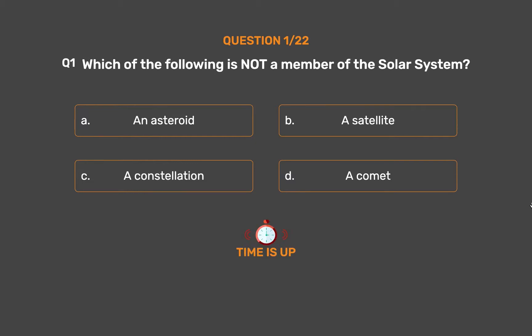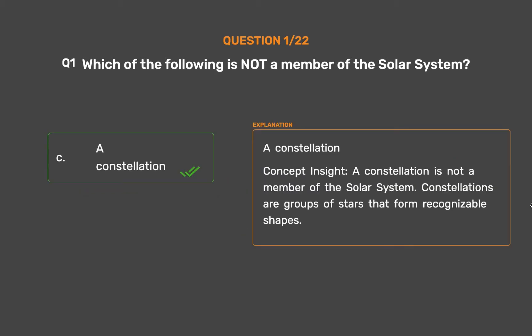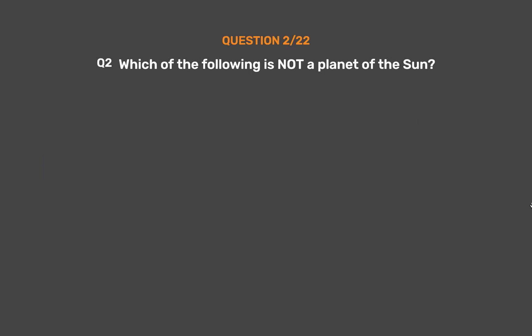The correct answer is Option C: A Constellation. Concept Insight: A constellation is not a member of the Solar System. Constellations are groups of stars that form recognizable shapes.